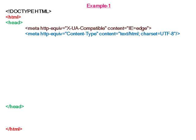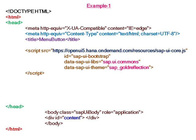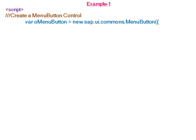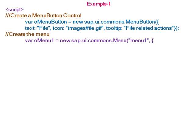In this example, we will create a menu button. The theme is Gold Reflection, and in the body section we have a div with id 'content'. In the application section, we create a menu button with the text 'File', an icon, and a tooltip.